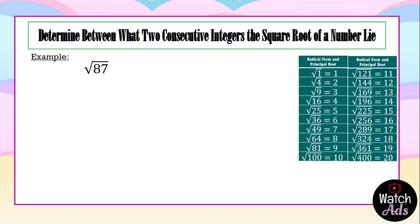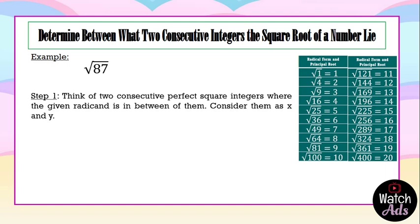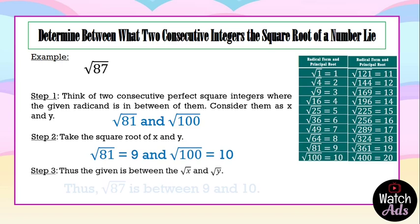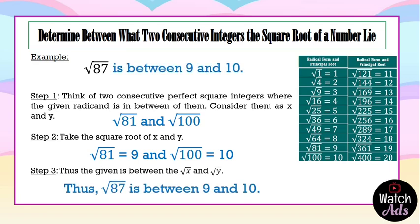Another example is the square root of 87. Our first step is to think of two consecutive perfect square integers where the square root of 87 is in between. Looking at our side notes, the square root of 87 is between the square root of 81 and the square root of 100. Taking their square roots, we get 9 and 10 — the square root of 81 is 9 and the square root of 100 is 10. Therefore, the square root of 87 is between 9 and 10.